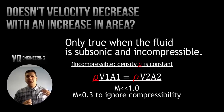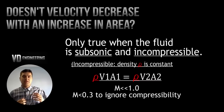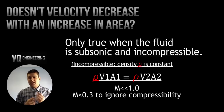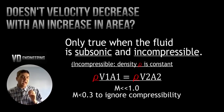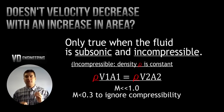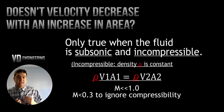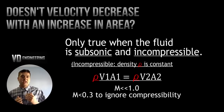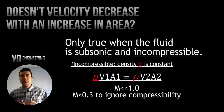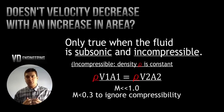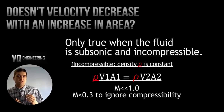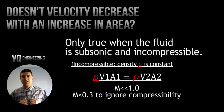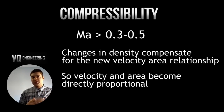This sounds counterintuitive because in second year fluid mechanics you learn that the velocity of a fluid will increase when the area decreases — but that is only true for an incompressible fluid, where the density must be constant and the fluid operates at a speed much below the speed of sound, at Mach 0.4 or below. The moment the fluid exceeds Mach 0.5 and the density begins to change, that is when the phenomenon is reversed.